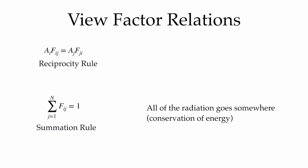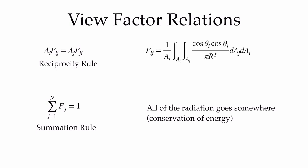There are some important relations between view factors. The two most important are the reciprocity rule and the summation rule. The reciprocity rule states that Ai·Fij = Aj·Fji — so if you know the areas of surfaces i and j and you know Fij, you can calculate Fji. By conservation of energy, all radiation leaving surface i must go somewhere, so the sum of all view factors from surface i to every surface it's in radiative contact with must equal one.